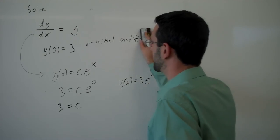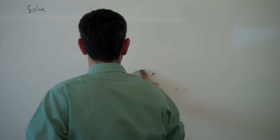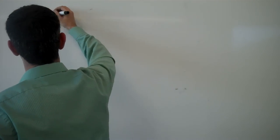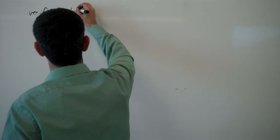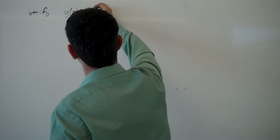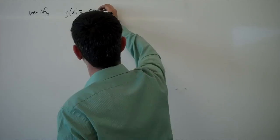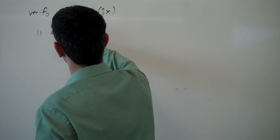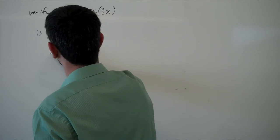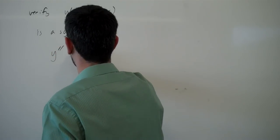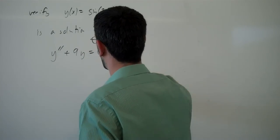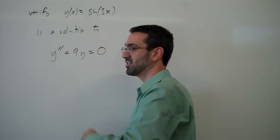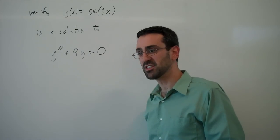So, that's the basic idea of a differential equation. Let's look at one more here. Let's verify that y(x) equals sin(3x) is a solution to y'' + 9y = 0. So, now, this is a different type of differential equation. This is called a second-order differential equation because it involves the second derivative.